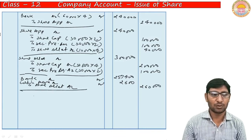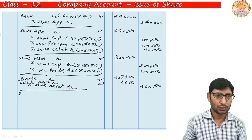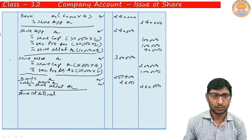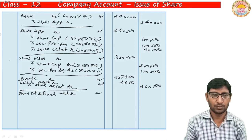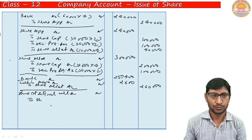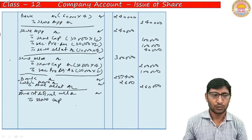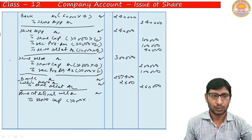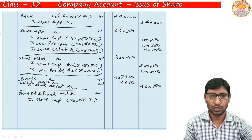Next, show the first and final call due. Entry: Share First and Final Call Account Dr. to Share Capital. Total = 50,000 shares × Rs. 4 = Rs. 2,00,000 due on first and final call.